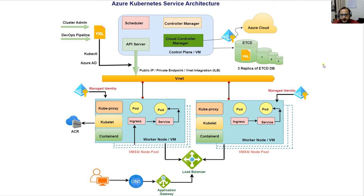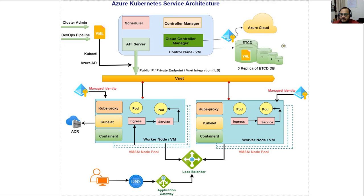Hello all, welcome to my YouTube channel. In today's video we are going to discuss Azure Kubernetes Service architecture. In AKS, or in Kubernetes generally, there are two major components: the first one is called the master control plane, and the other is called the worker node, where our application runs.